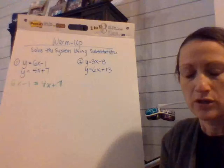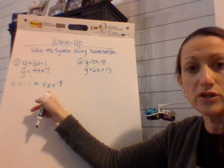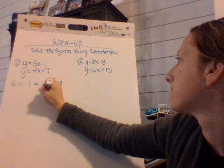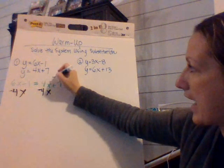I have variables on both sides of my equation. So I'm going to move my 4x to be with my 6x by subtracting 4x. They cancel out to the right.